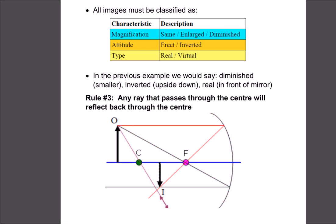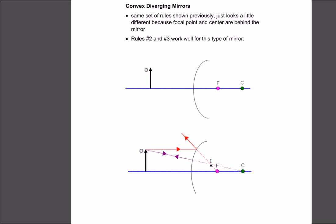The third rule — we don't always need all three, usually two is enough — says if we draw a ray through the center of the mirror, it'll reflect back right through the center. You can see that this third line ends up intersecting in the same spot as the other two, so we still get the exact same image location.